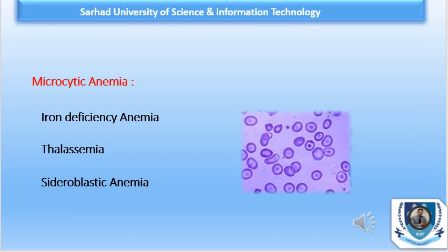Iron deficiency anemia is a type of microcytic anemia. There are three or four types of microcytic anemia: the first one is iron deficiency anemia, then we have thalassemia, sideroblastic anemia, and sometimes anemia of chronic disorder. In today's topic, we are going to discuss iron deficiency anemia. Its name indicates that in this anemia, a deficiency of iron occurs, which is why we have a low level of hemoglobin.